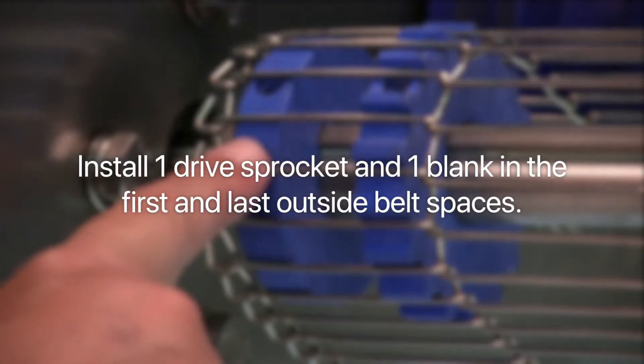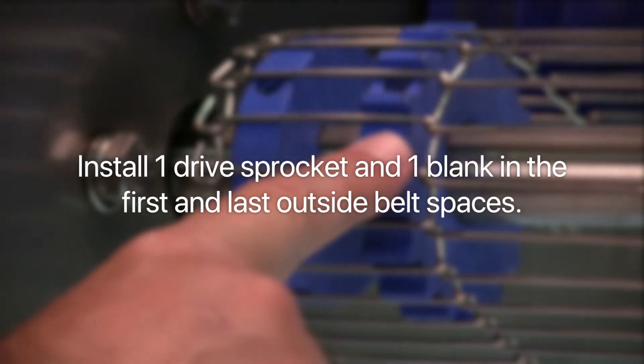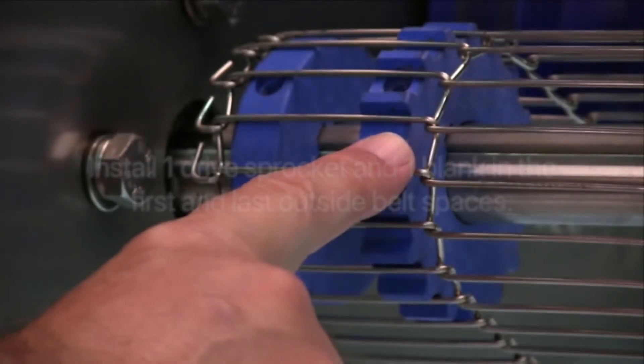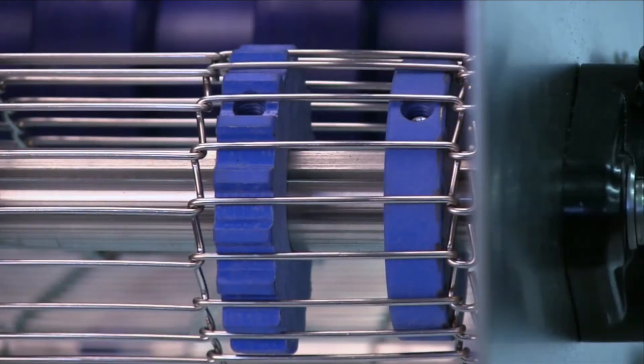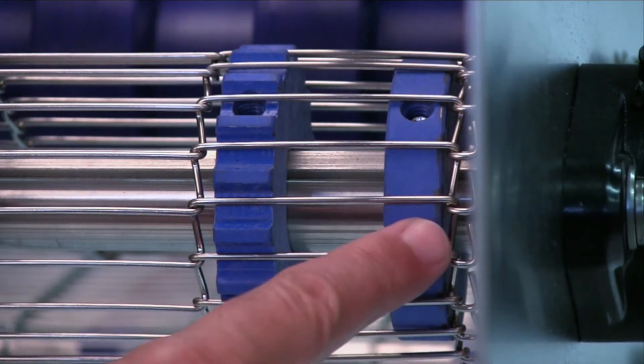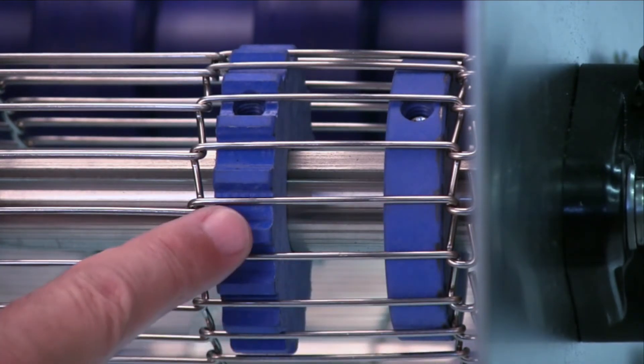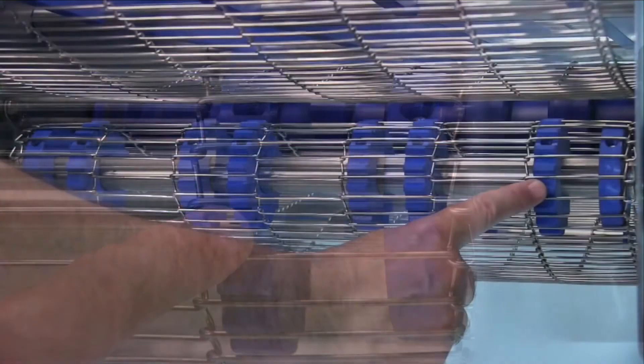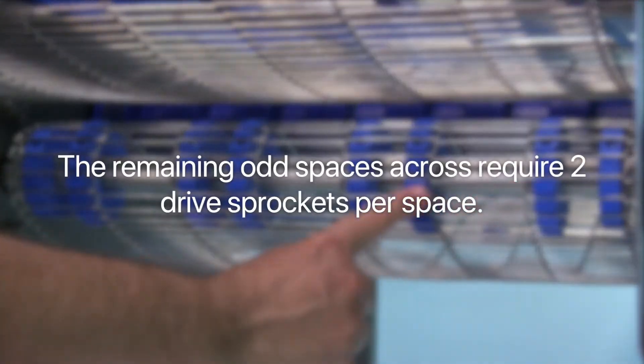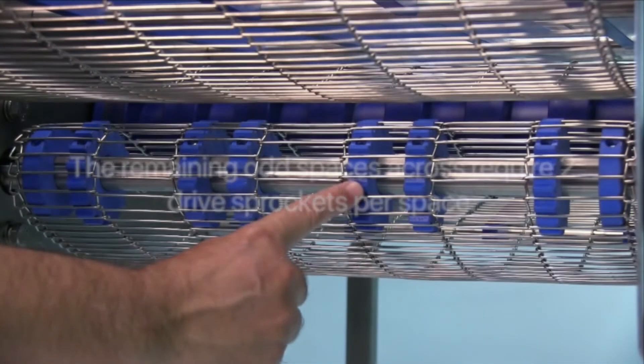Install one drive sprocket and one blank in the first and last outside belt spaces. The remaining odd spaces across require two drive sprockets per space.